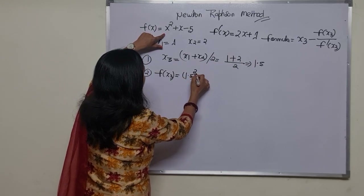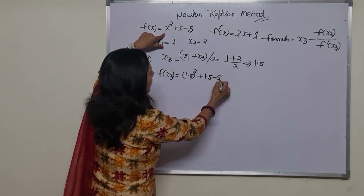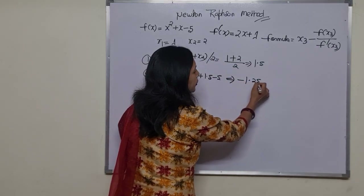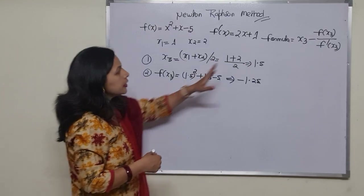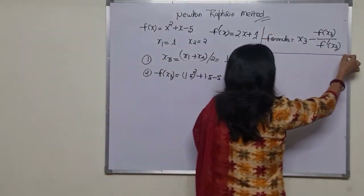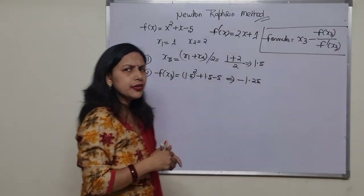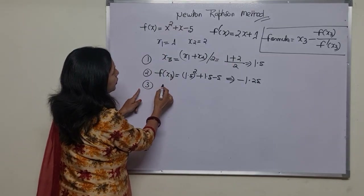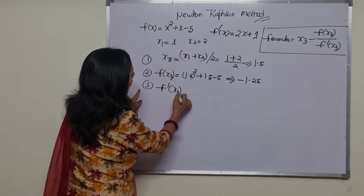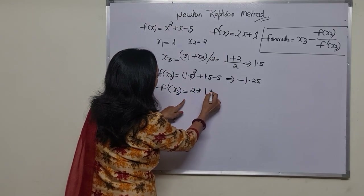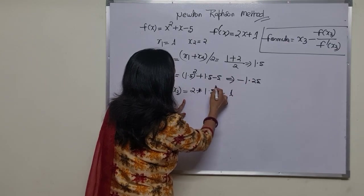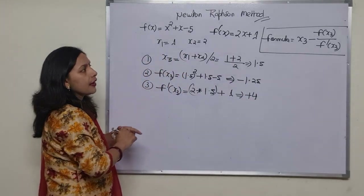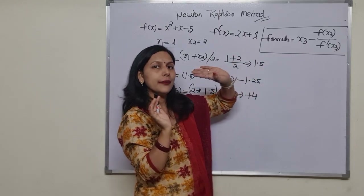By putting 1.5 into the equation, we get f(x3) equals minus 1.25. Now for f'(x3), we put the value of x3 into the differentiation equation: 2 into 1.5 plus 1, which gives us positive 4.